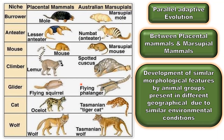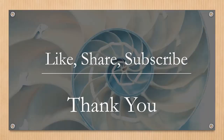For example, we can see the spiny anteater on the left side, whereas we have a similar type of anteater on the Australian continent — the numbat. Students, I hope you are clear with the concept of adaptive radiation shown by Darwin's finches, marsupial mammals, and placental mammals. Parallel adaptive radiation can be seen when we compare marsupial mammals with placental mammals.